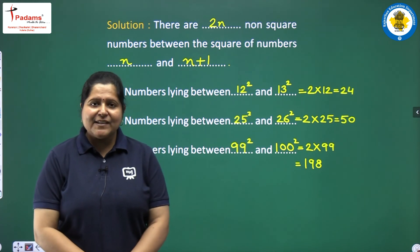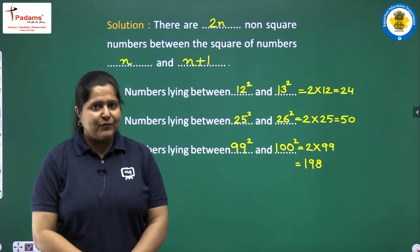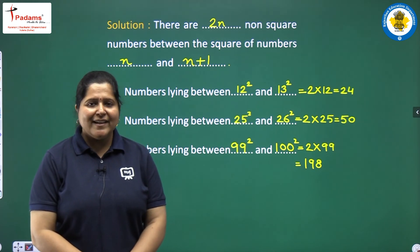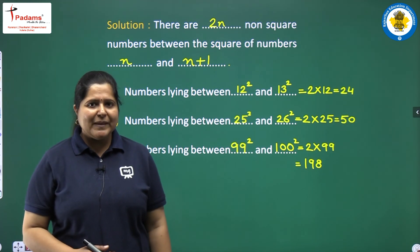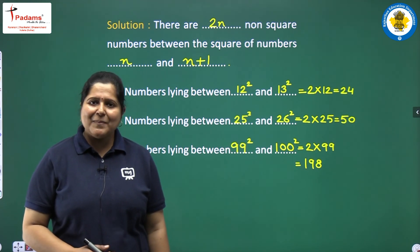So 198 numbers will lie between 99 squared and 100 squared. This was your Exercise 6.1. It was very easy. I hope you enjoyed it. Practice these questions and try to make your own questions. Soon we will meet again. Goodbye.